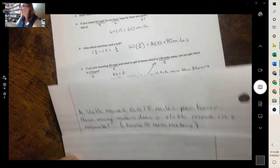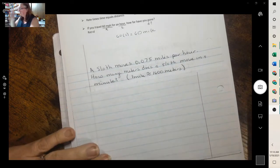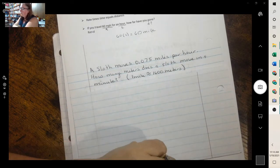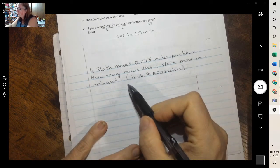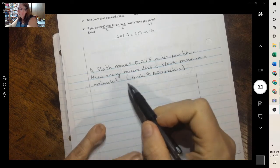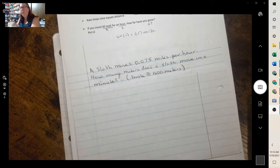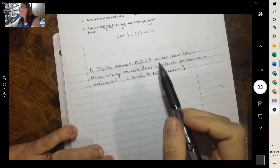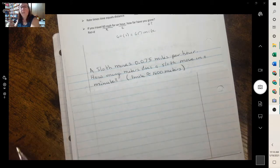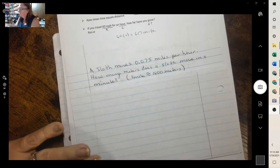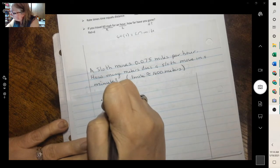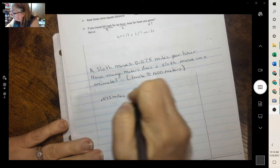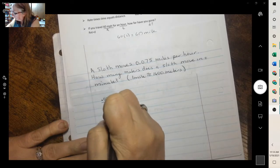Let's try one more. Now this one, notice they want miles per hour is what we have, and then we're going to meters in a minute. So instead of finding like a distance or something, we're just changing the rates.